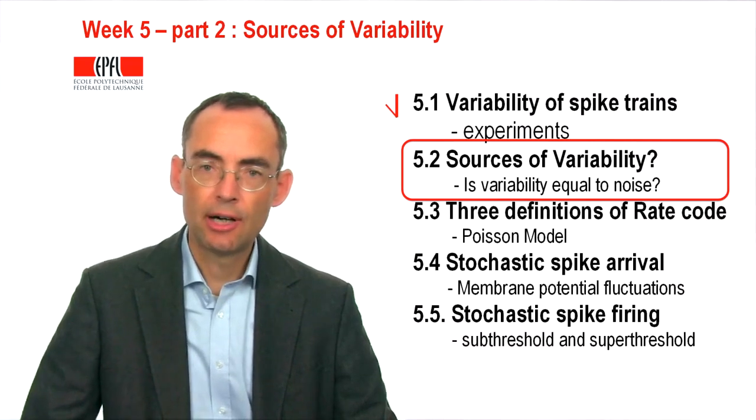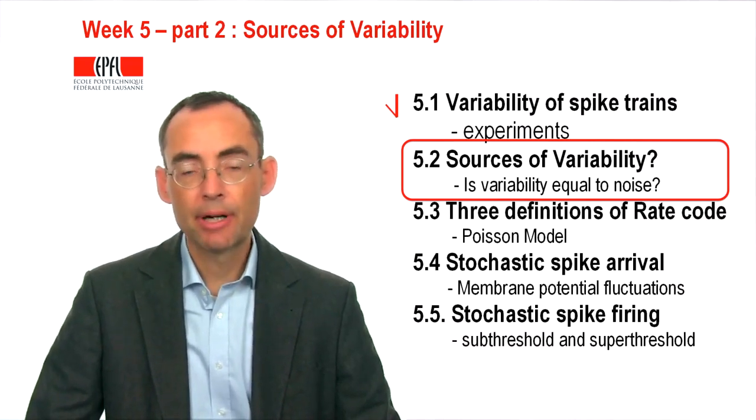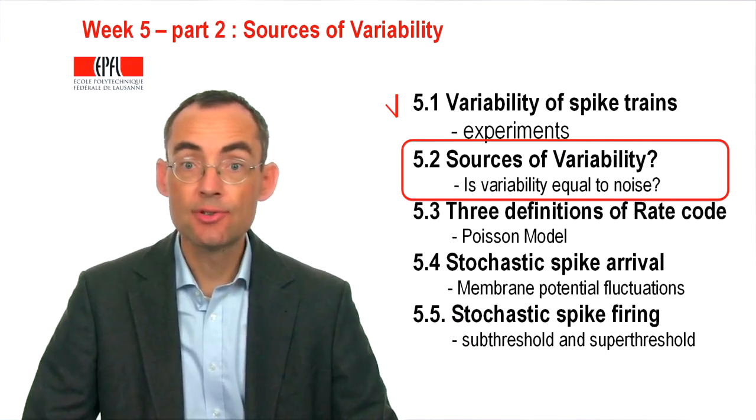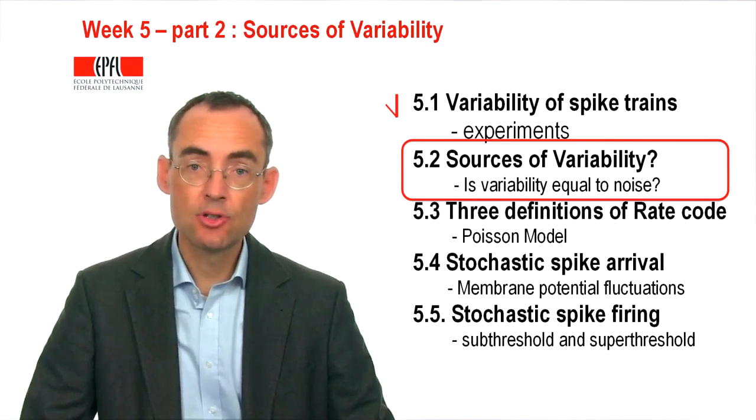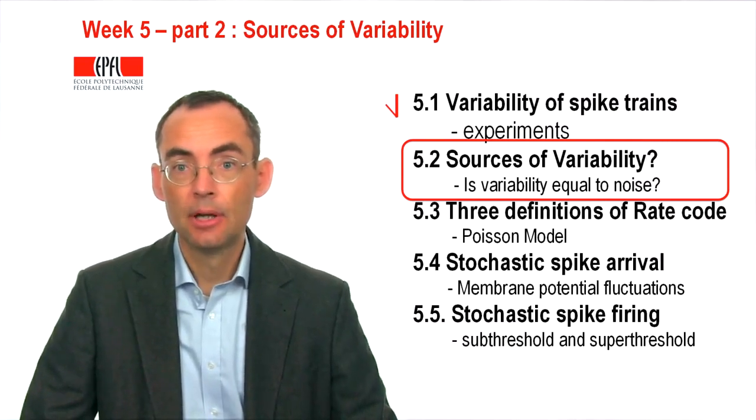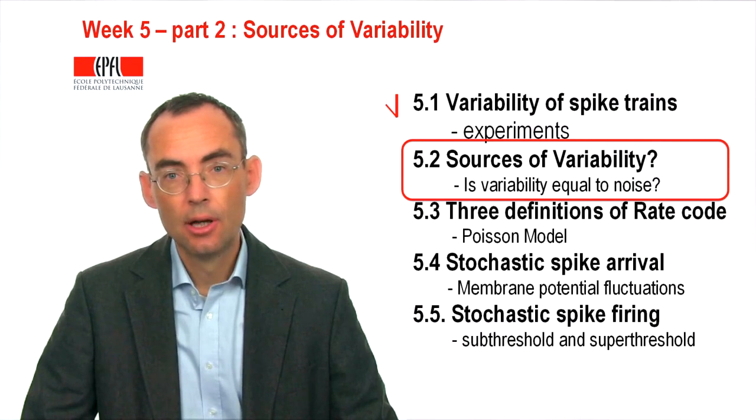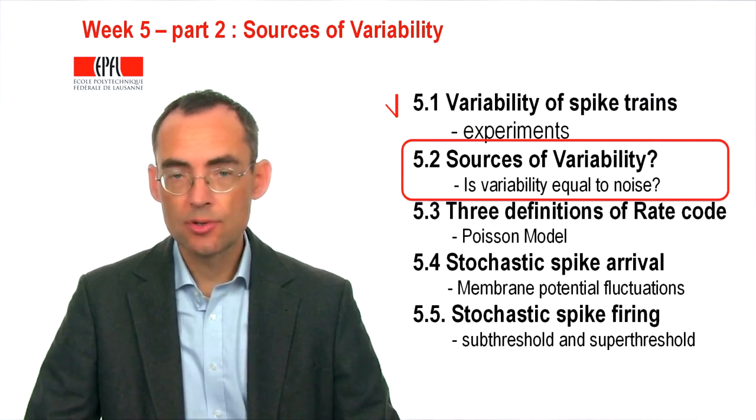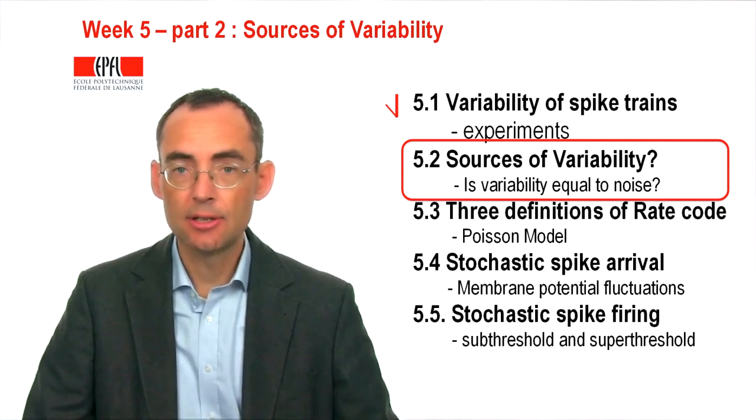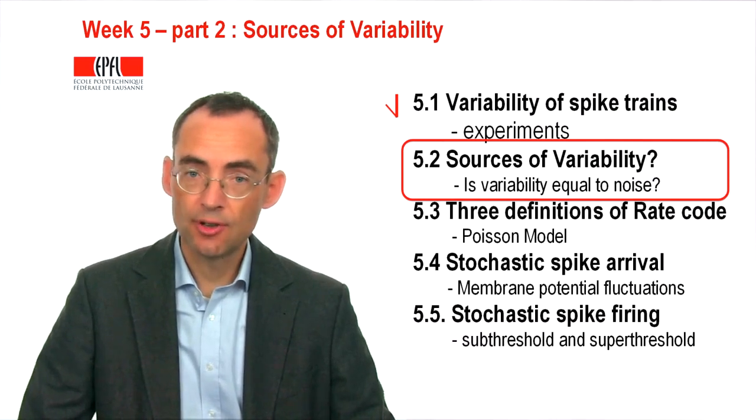In part 1 of week 5, we have seen that membrane potentials show fluctuations, and we have seen that spike timing is not reliable. Then the question arises: what are the sources of this variability? What is the source of the fluctuations?